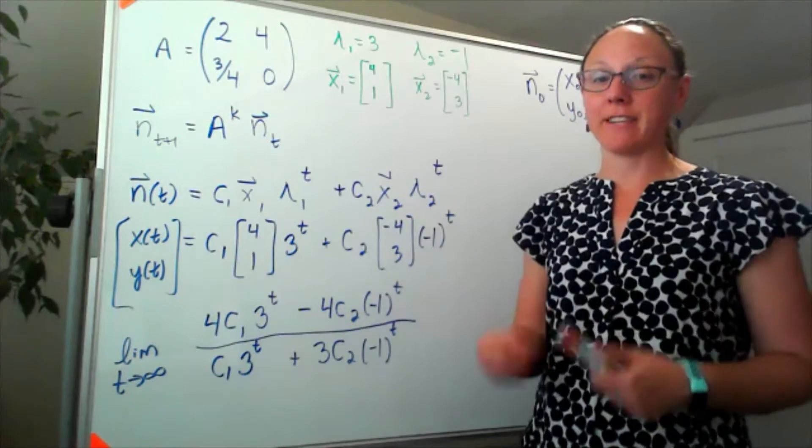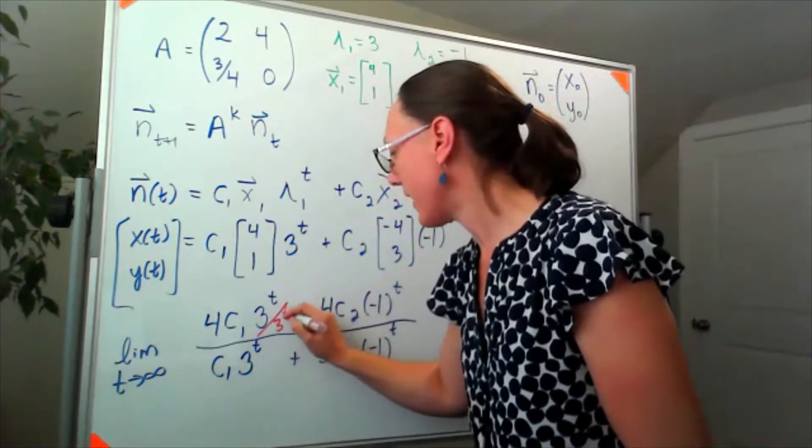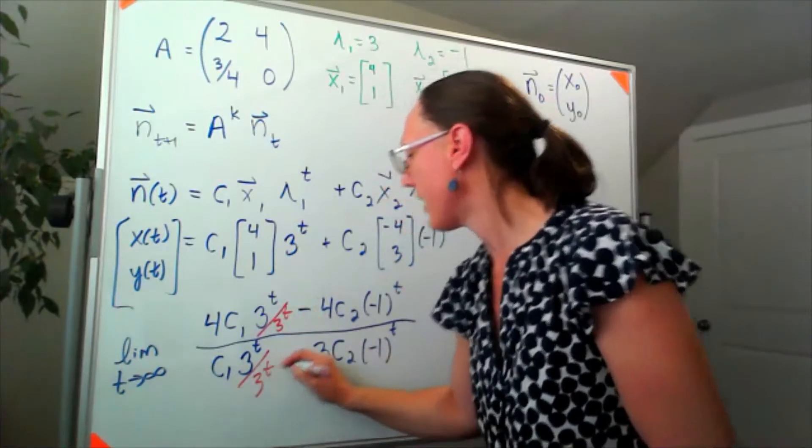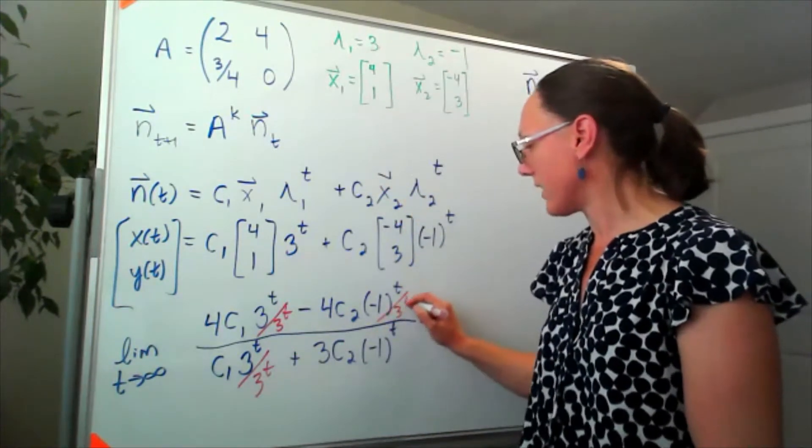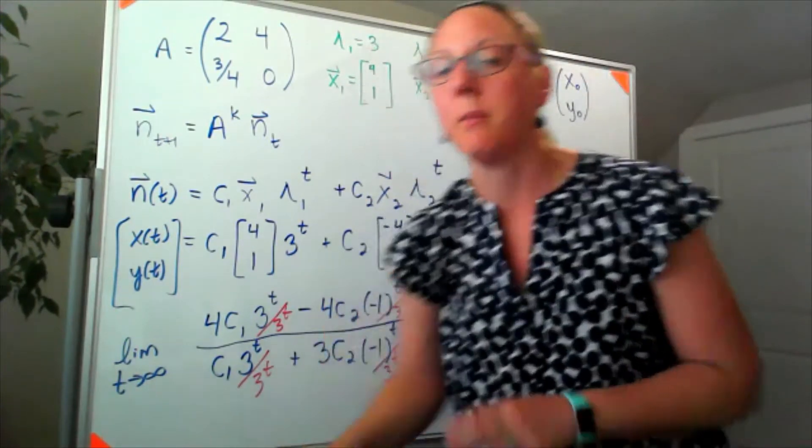So I'm going to go through this entire piece and I'm going to divide every single term by 3 to the t. So I'm going to divide this by 3 to the t, and divide this by 3 to the t, divide this by 3 to the t, and divide this by 3 to the t.